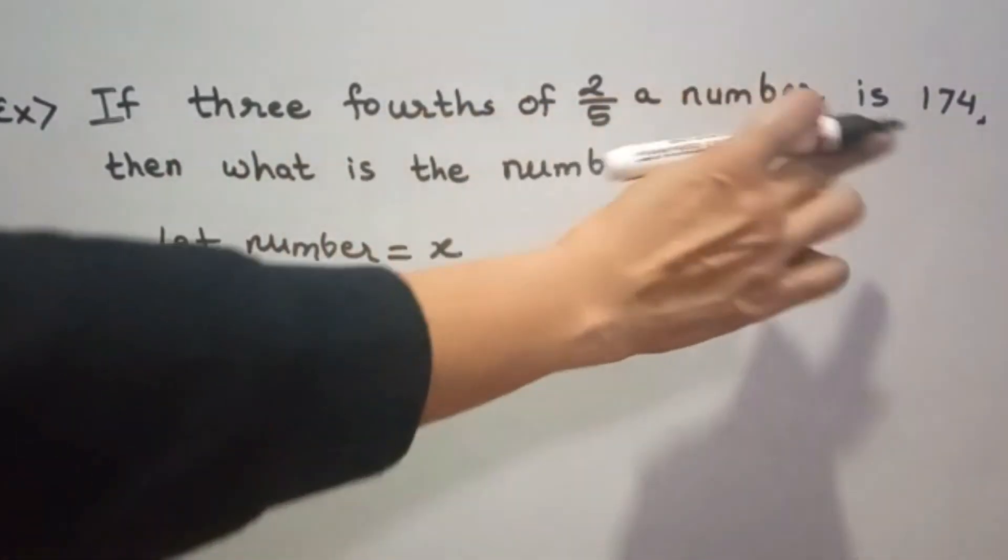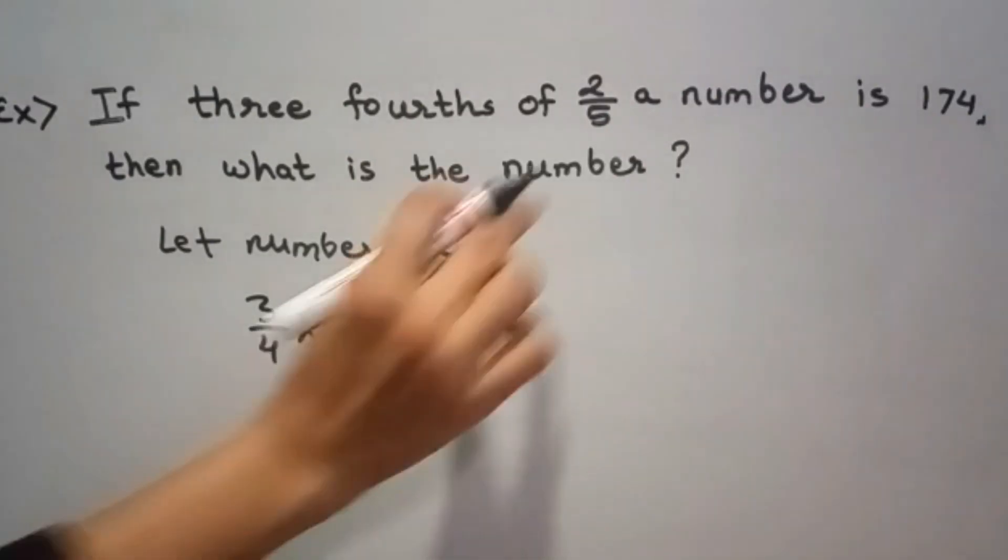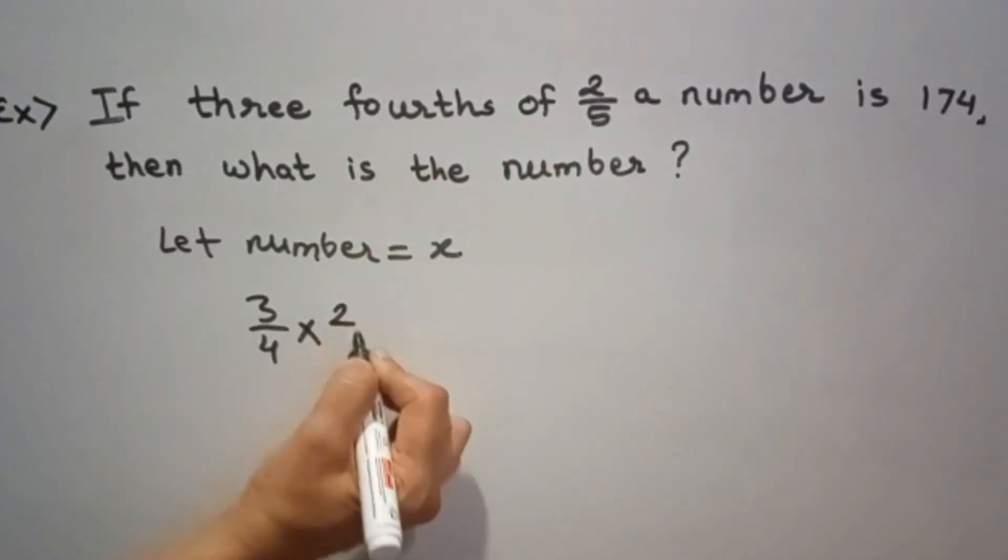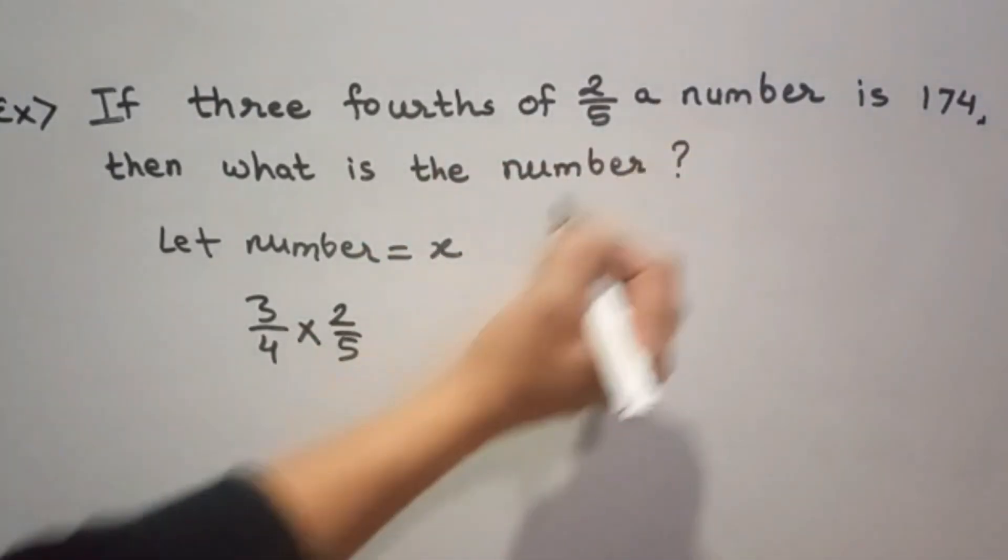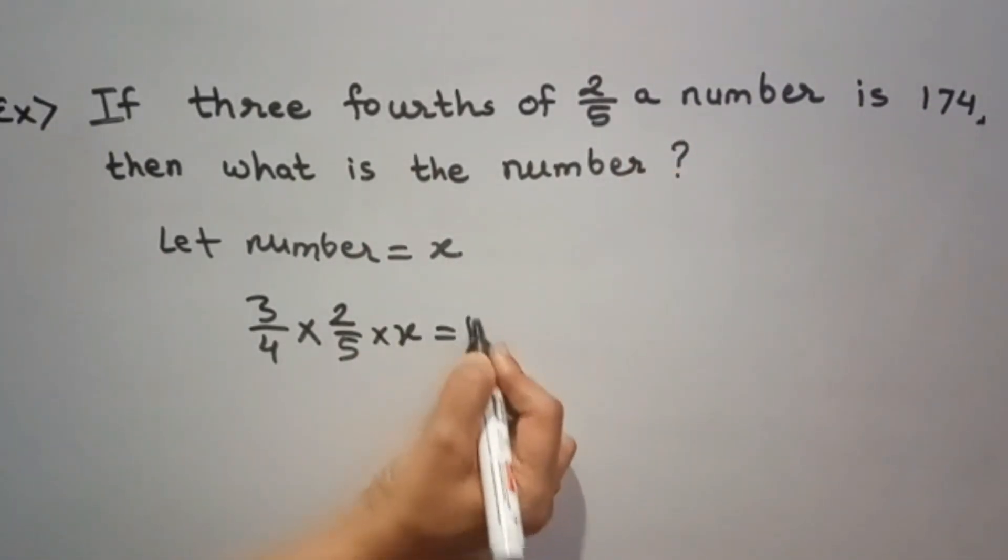3 fourths of 2 by 5 of a number. So 3 fourths of 2 by 5 of a number, number is x, is equal to 174.